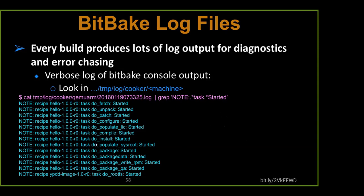The cooker log shows all the different tasks, and it happens to be in the order they were actually done — nice because normally we don't see that. The list-tasks command gives us alphabetical order but doesn't tell us the actual order. The cooker log for this QEMU ARM architecture shows the actual order tasks were performed: fetch, then unpack, patch, configure, populate the license, compile, install, populate sysroot, package data and QA, and finally rootfs.